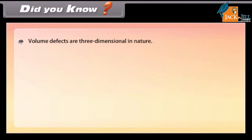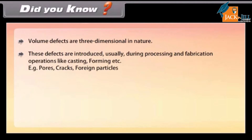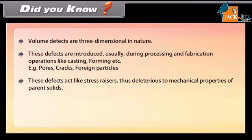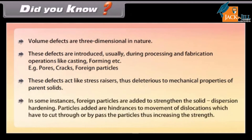Did you know: Volume defects are three-dimensional in nature. These defects are introduced usually during processing and fabrication operations like casting and forming. Examples include pores, cracks, and foreign particles. These defects act like stress raisers and are thus detrimental to the mechanical properties of the parent solid. In some instances, foreign particles are added to strengthen the solid — this is called dispersion hardening. The particles added act as hindrances to the movement of dislocations, which have to cut through or bypass them, thus increasing strength.